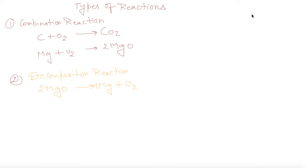Hello my dear students, now the types of reactions. Number one is combination reaction. Combination reaction: carbon reacts with oxygen and will give you CO2. Magnesium reacts with oxygen gives you MgO.